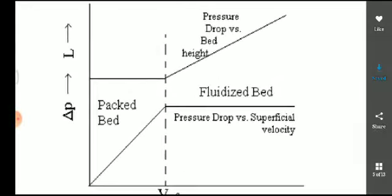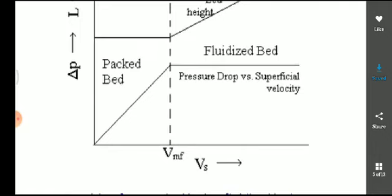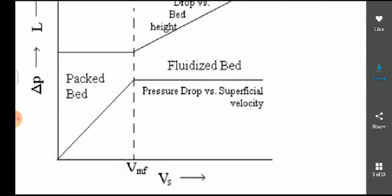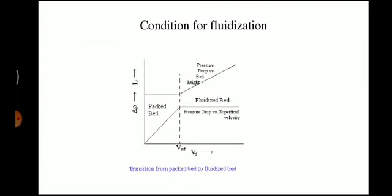At the central point on the graph, the velocity is the minimum fluidization velocity (Vmf). The pressure drop versus superficial velocity graph shows that once the bed is fluidized, pressure drop stays constant. A minimum flow rate of gas is required to achieve this condition.